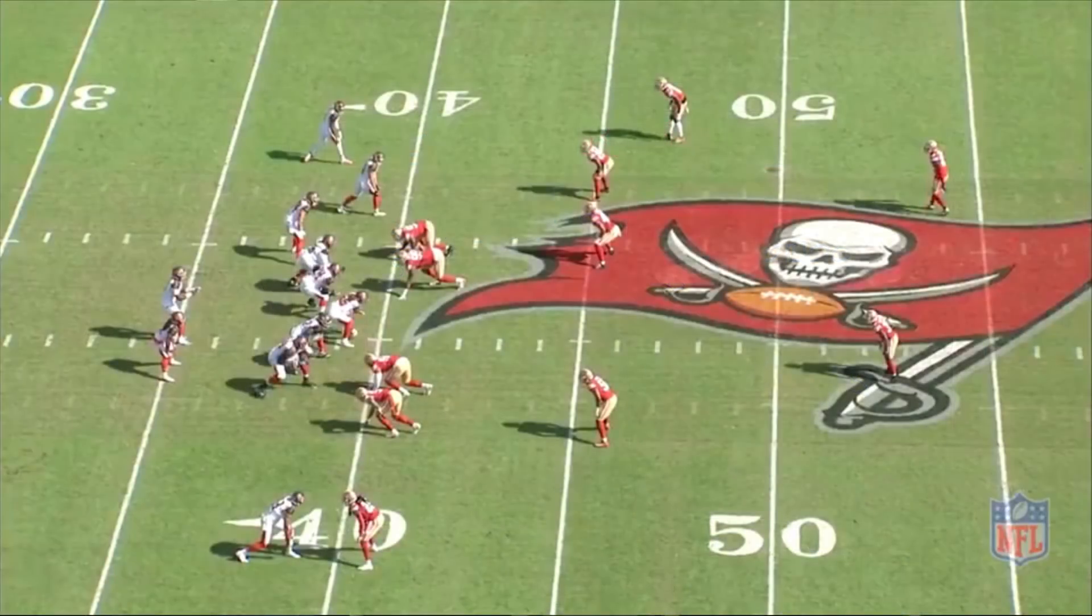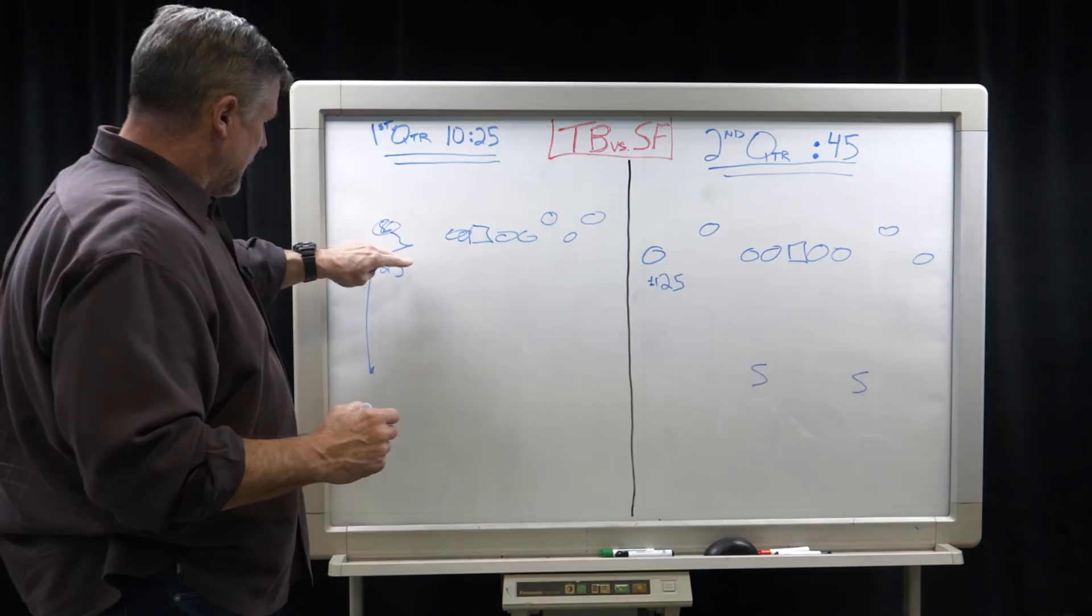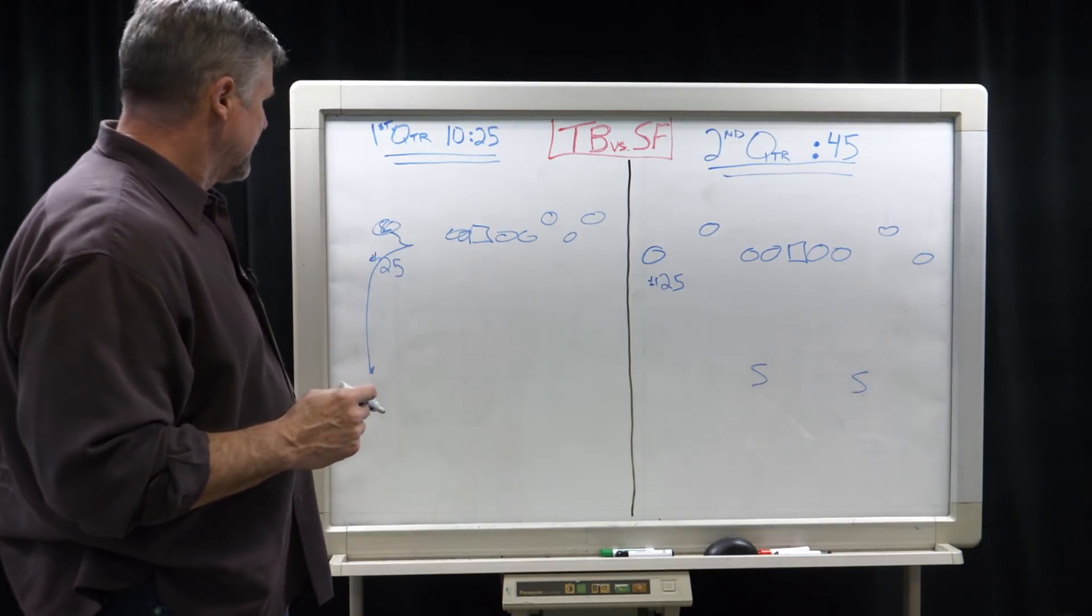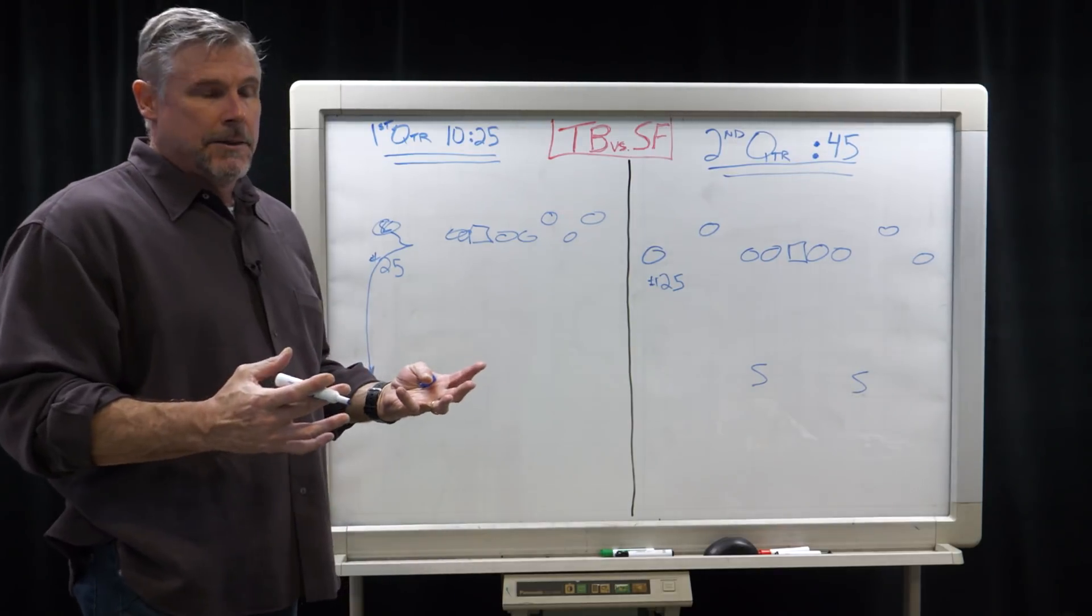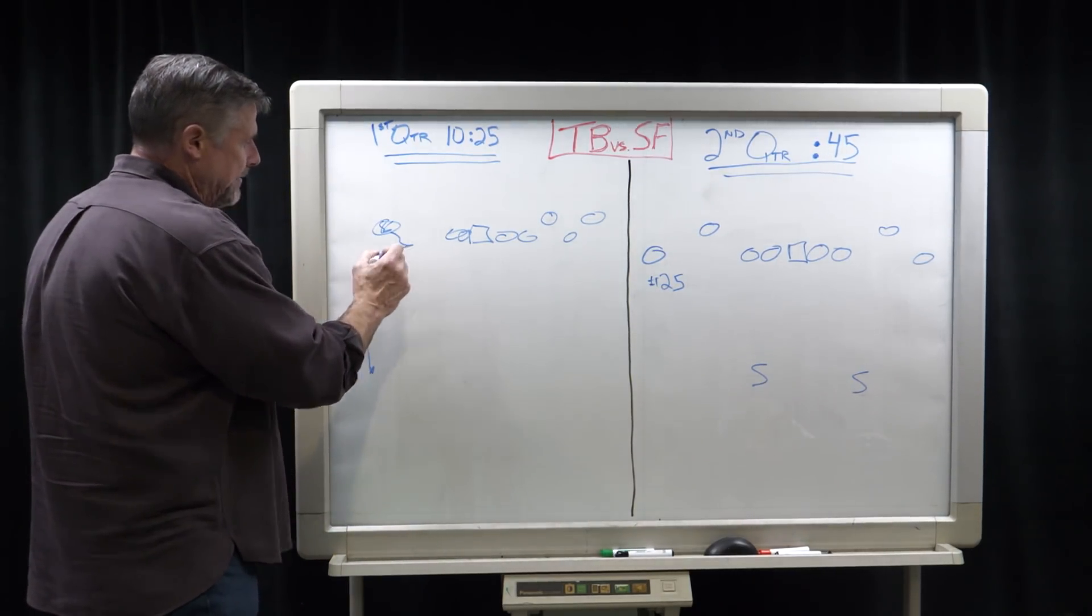Tampa Bay, first quarter with 10:25 left. Mike Evans right here beats him on a little out route and goes down the sidelines, just a nine route basically. The thing that happened was that Sherm is usually really good with his hands, getting up there and jamming receivers, and he missed him.